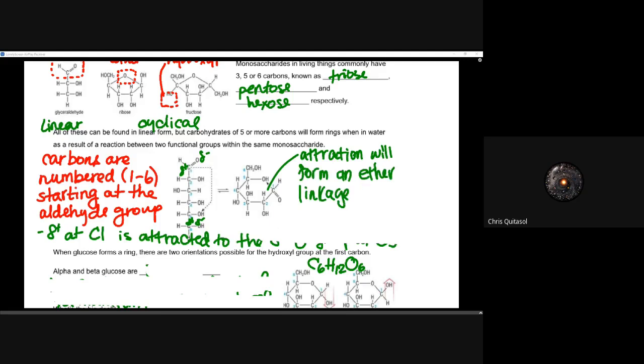All of these can be found in linear form, but carbohydrates of five or more carbons tend to form rings when they're in water, as a result of a reaction between two functional groups. The ionic components of functional groups — when they are polar — can start to form different bonds, and as a result of forming those bonds, they can change shape and structure.